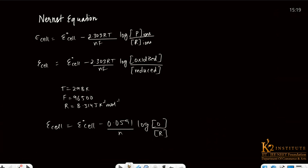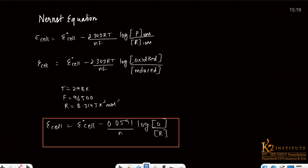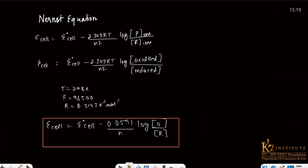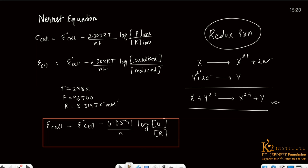Today's topic is related to this main equation. This equation is applicable when some substance X is oxidized by loss of some electrons and some substance Y is reduced by gain of some electrons — in simple language, when a redox reaction is taking place and we use this equation to calculate the voltage of a cell.